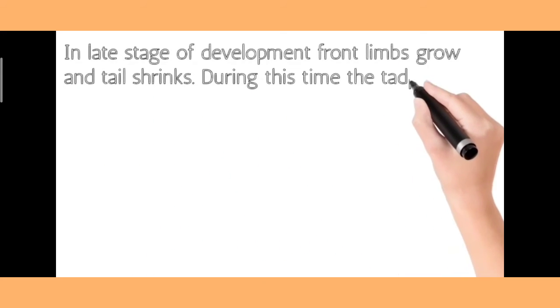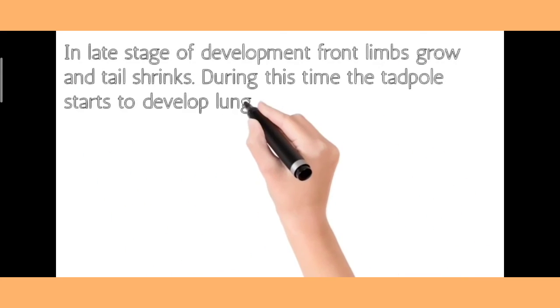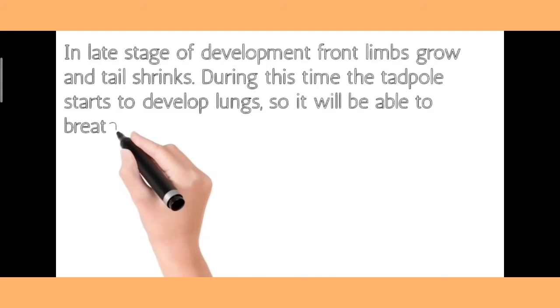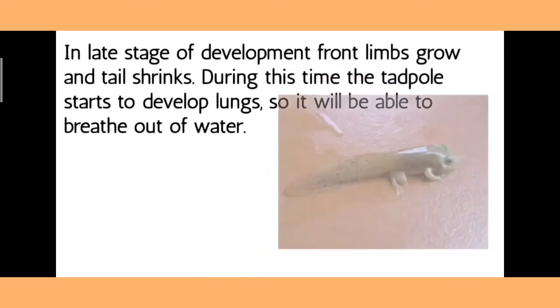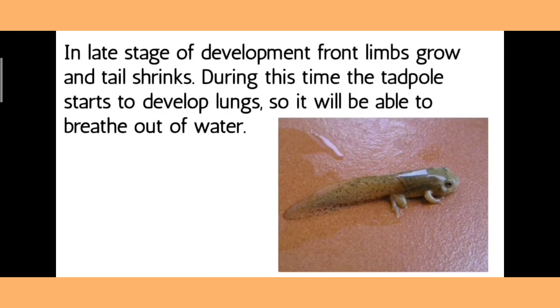In the late stage of development, front limbs grow and the tail shrinks. During this time the tadpole starts to develop lungs so it will be able to breathe out of water.